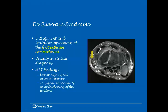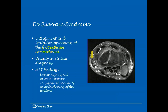De Quervain's syndrome, or De Quervain's tenosynovitis, is a particularly common entity encountered when imaging the wrist. It results from entrapment and irritation of the tendons of the first extensor compartment. It is usually a clinical diagnosis but can be diagnosed on MRI, where findings include tenosynovitis with low or high signal around the tendons, as well as signal abnormality and thickening of the tendons — tendinosis.